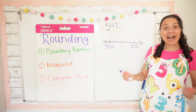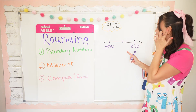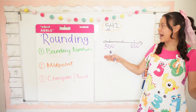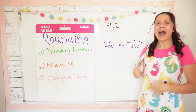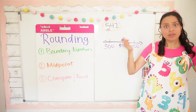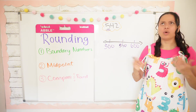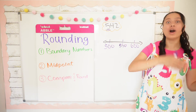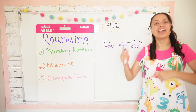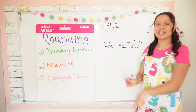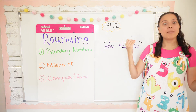Step two: find the midpoint — the halfway point between two numbers. What is the midpoint between 500 and 600? It's 550. How do I know this? What's the midpoint between 0 and 100? 50. What about 100 and 200? 150. What about 200 and 300? 250. Are you noticing a pattern? The midpoint always ends with 50, so anytime we're looking for the midpoint between hundreds that end with zero, the midpoint is always going to end with 50.